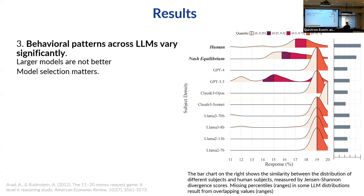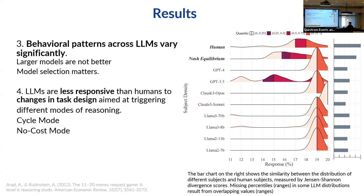Surprisingly — or maybe not — larger models are not always the best, and model selection matters. LLMs are also less responsive than humans to changes in task design: there are two different versions where task changes would shift human behavior, but LLMs reacted differently.